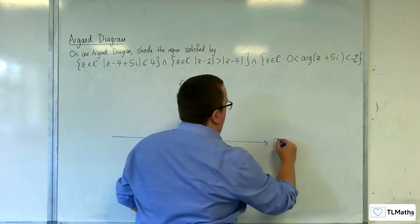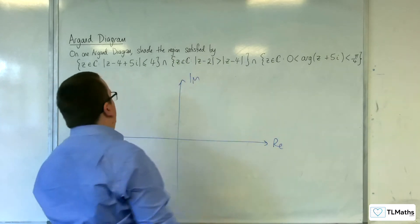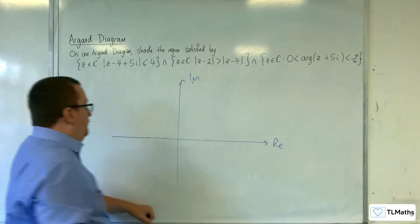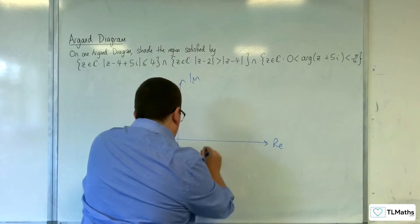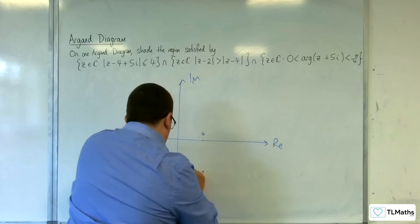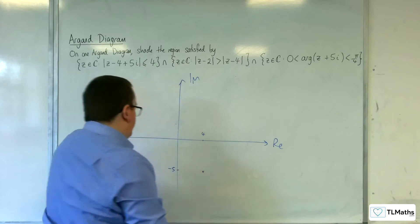So, real axis, imaginary axis. 4 minus 5. So, 4 along, 5 down. Something like that. So, that's 4, and that's minus 5.